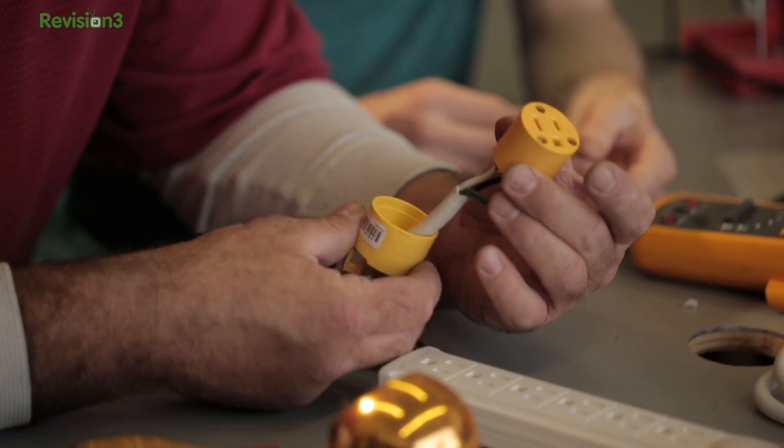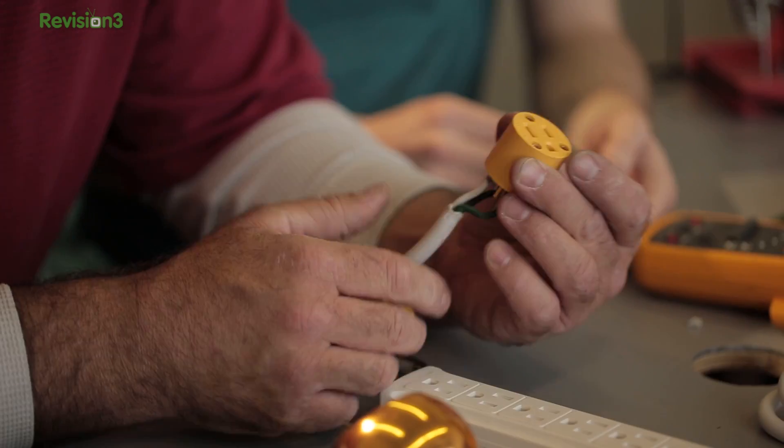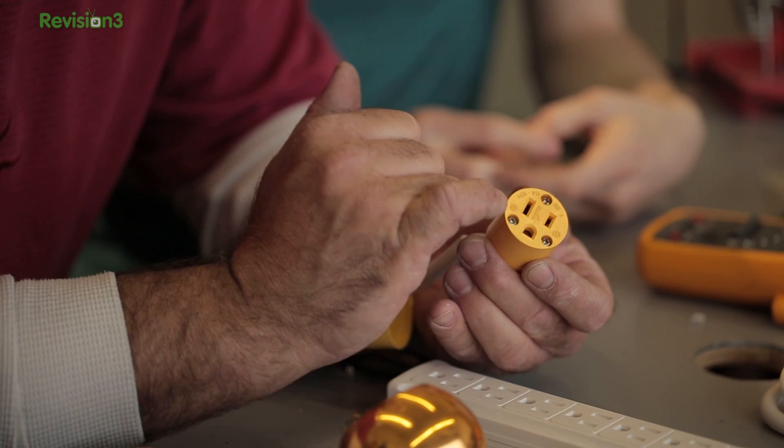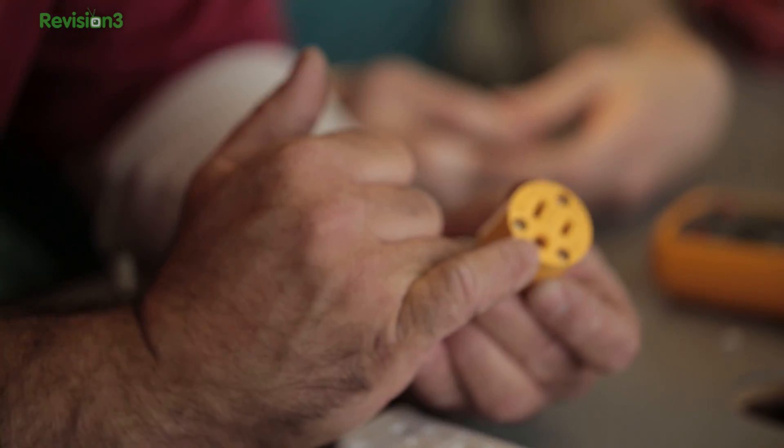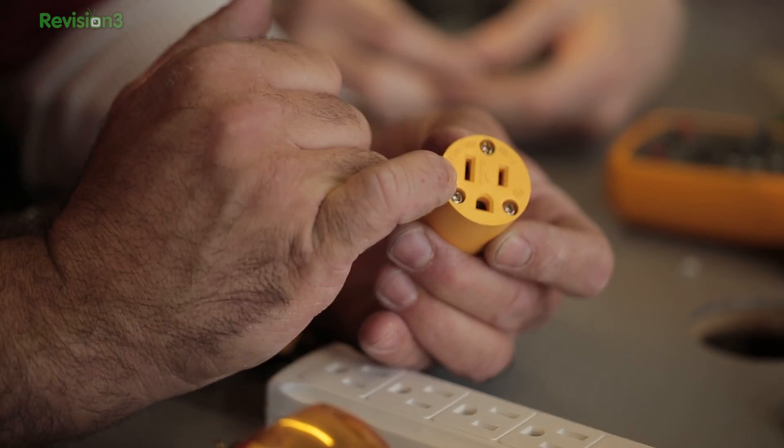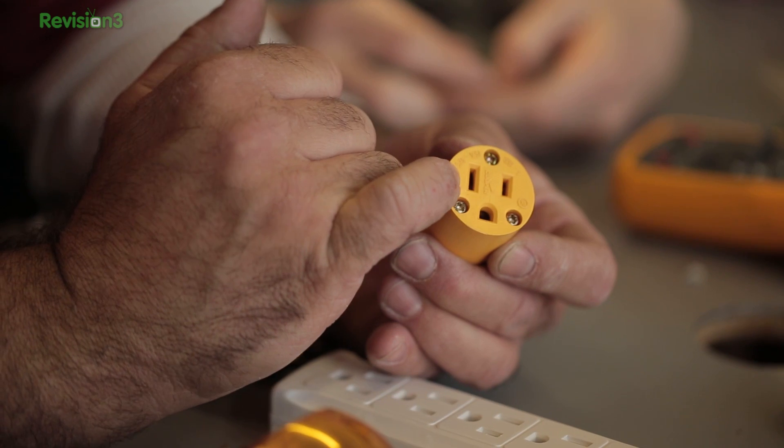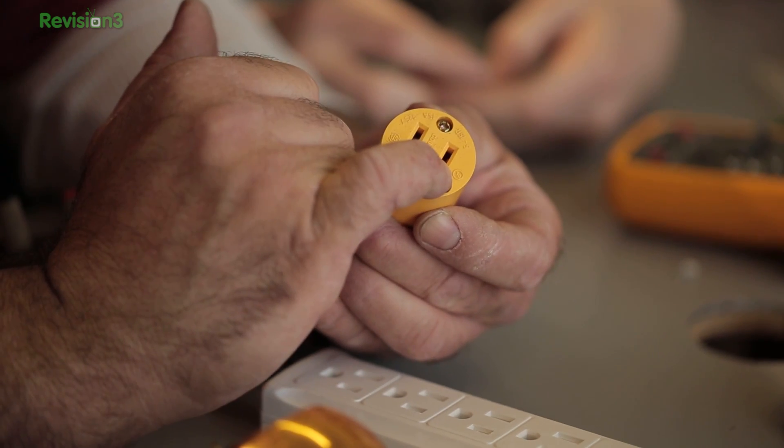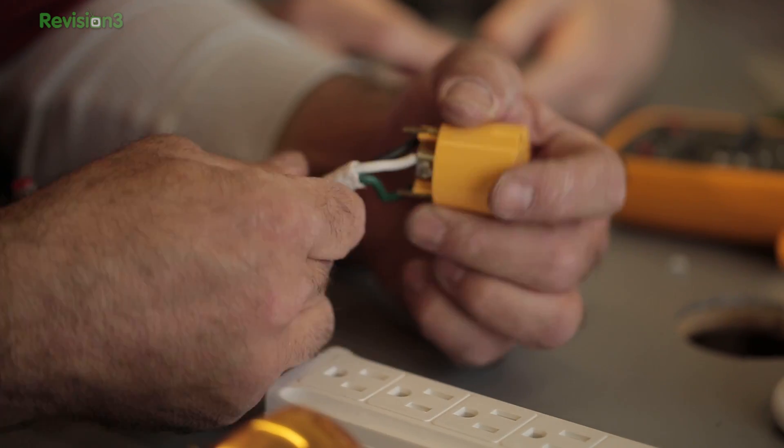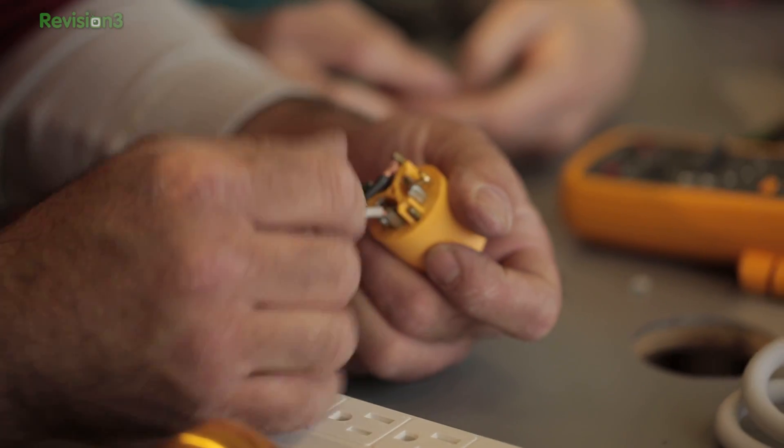Next, we'll wire in a female outlet, so that we can plug in the devices that we actually want to measure. Green goes to this one. The green, or ground, is the bottom hole. Neutral is the long slot, which gets the white wire. And the short slot is the hot wire, or black. And that would be green, white, black.